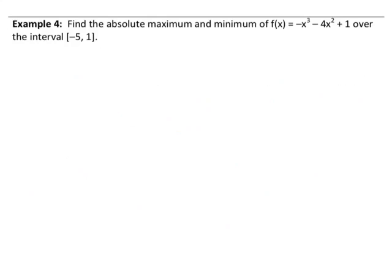Let's take a look at this example. It says: find the absolute maximum and minimum of f of x equals negative x cubed minus 4x squared plus 1 over the interval between negative 5 and 1. As noted before, we're going to have to look at both the endpoints and the critical values. We already know the endpoints, so let's go ahead first and find those critical values.